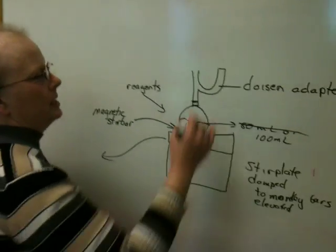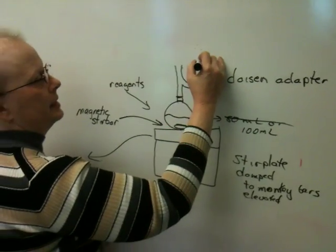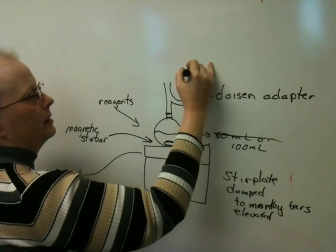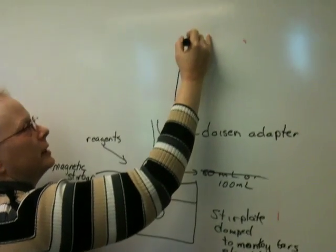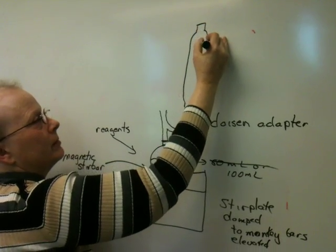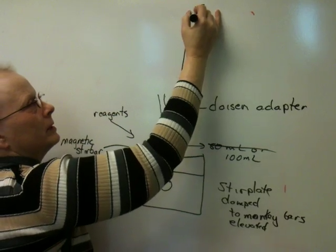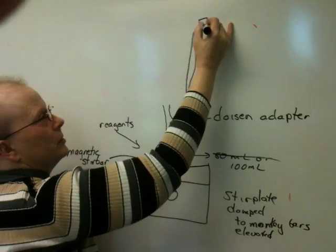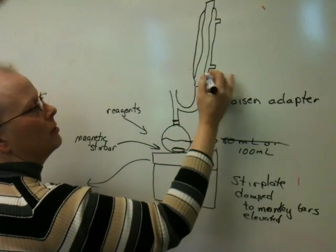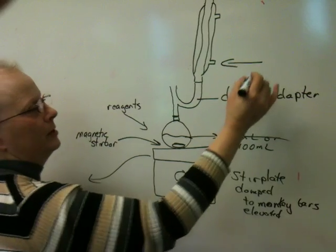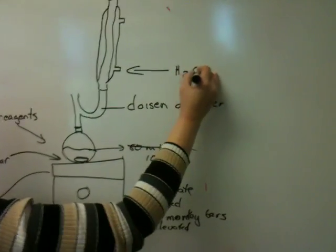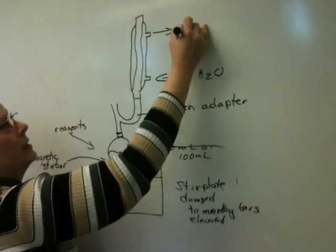On top of this, on the curved part of the Claisen adapter, I would put your condenser. I'm trying very hard to draw a reasonable looking condenser. Of course, as you know, my hands shake a lot. I have a tremor. And when I try to do things, my hands shake.